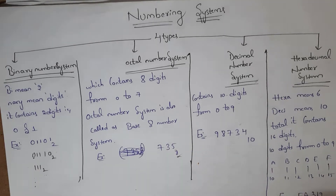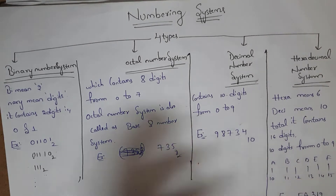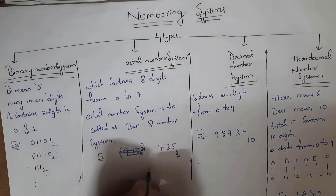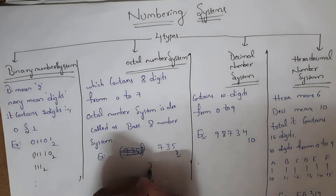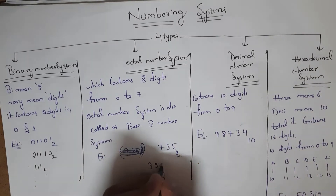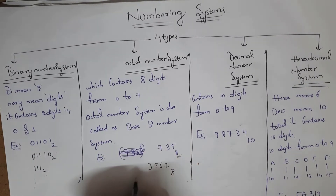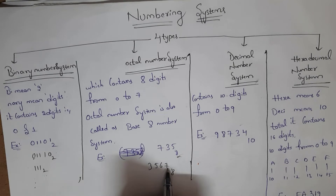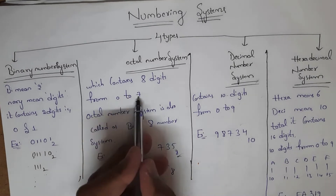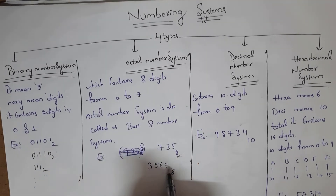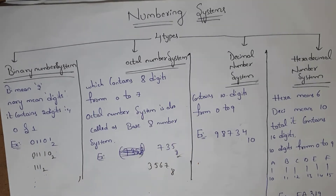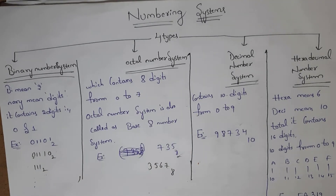Here you need to write base 8. Another example is 3567 base 8 — the numbers are all between 0 and 7, so we call it an octal number system. Next, I will explain the decimal number system.